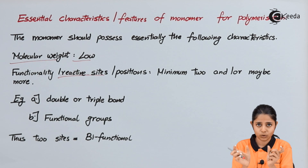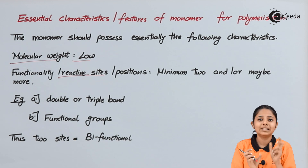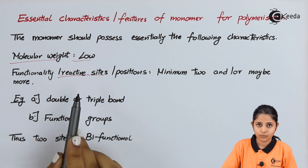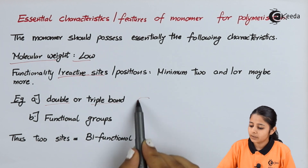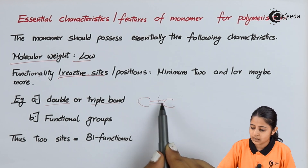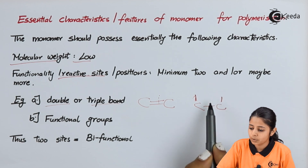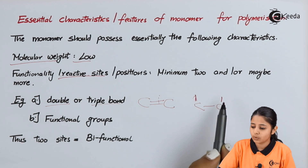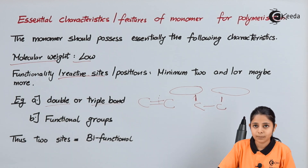We need at least two or more reactive points or positions for polymerization. Examples of reactive sites are double bonds or triple bonds. If we have a C double bond C and break this double bond, each carbon gets one free bond available. Something can come and stick to each carbon, enabling linkage. This is why double bonds serve as reactive sites.